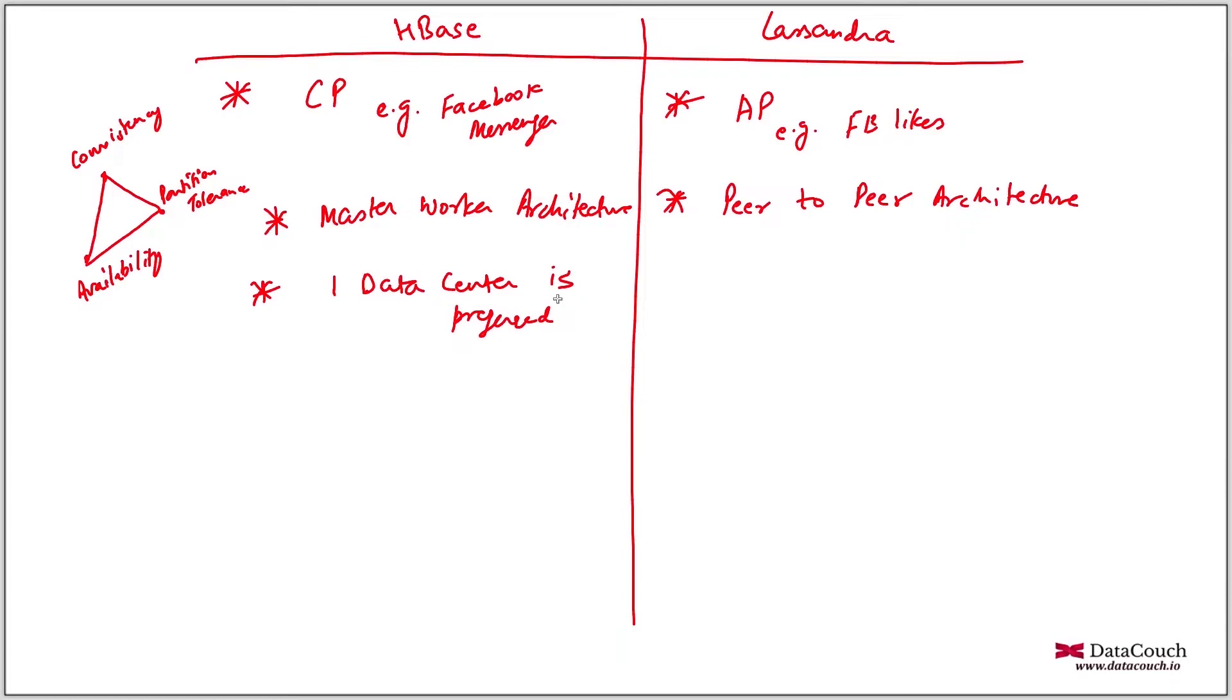If you are having one master in one data center and another in another data center, and we have workers in some other data centers, then the heartbeat will take time to propagate from worker to master and there will be timeouts. We will consider the workers are dead, so there will be issues related to this. That's why it's recommended to use one data center, but in Cassandra it's not master-worker, so it is fine to use multiple data centers.